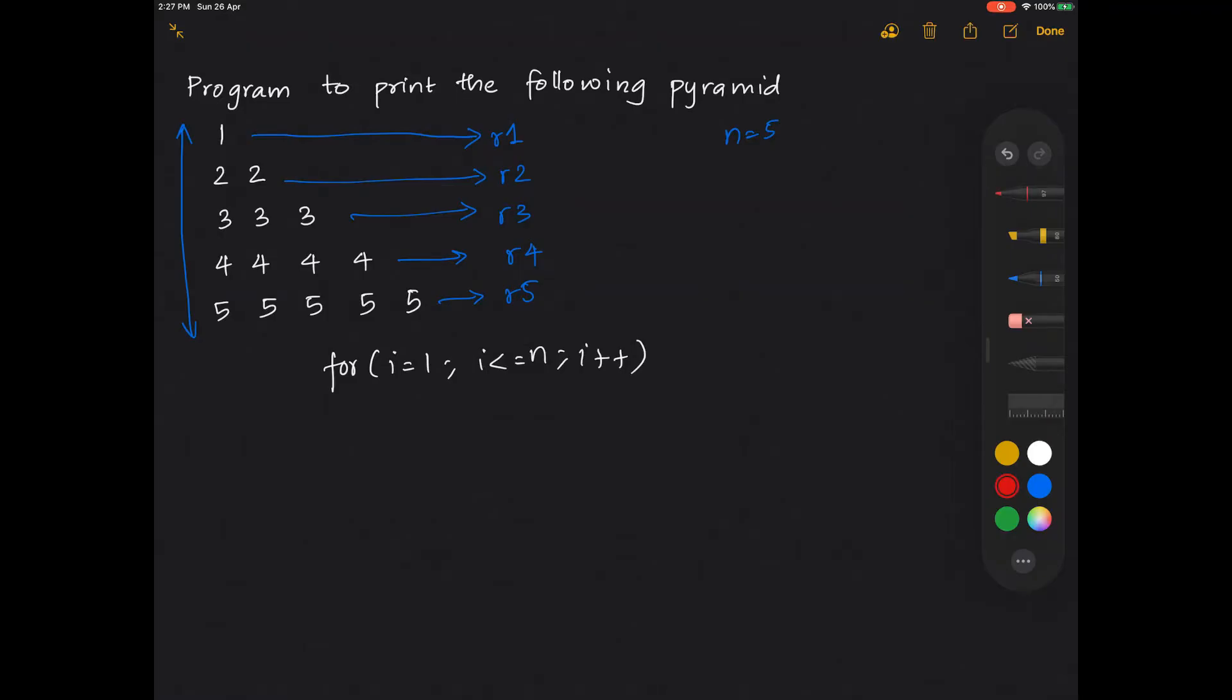I'll write the n value somewhere else, okay. So the value of n is equal to 5. I'll write it over here. Now in each row, how many number of values are there? It is 1 and the values are 1 itself. The second row: the number of values are 2 and both the values are 2 itself.